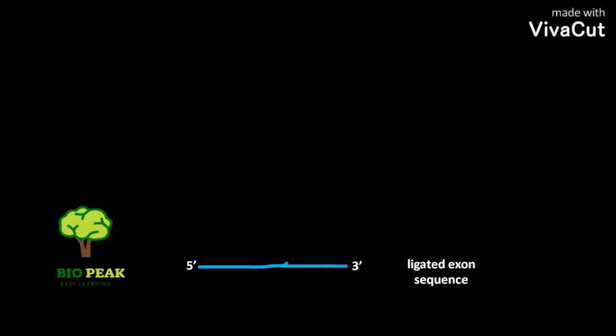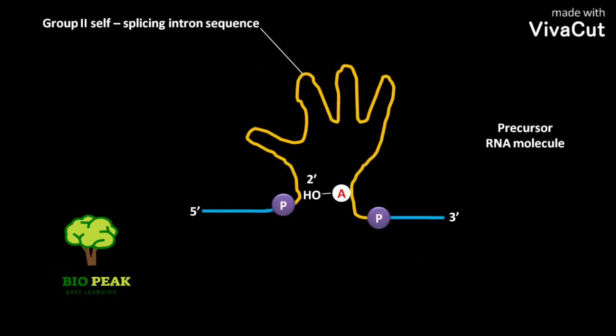The group 2 self-splicing intron sequence, along with a 5' exon sequence and a 3' exon sequence, is present in a primary transcript or a precursor RNA molecule. In the intron sequence, the 2' OH of a specific adenosine acts as a nucleophile and attacks the phosphate at the 5' splice site.